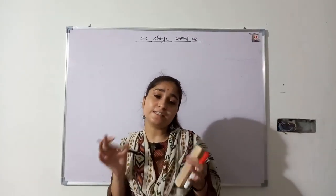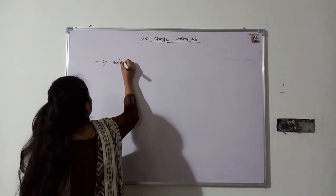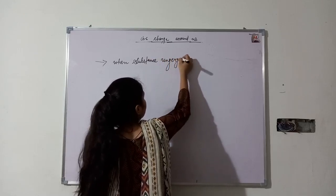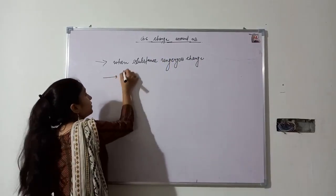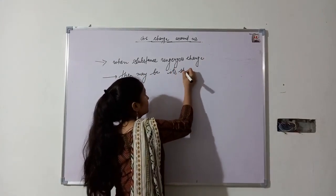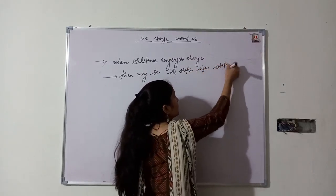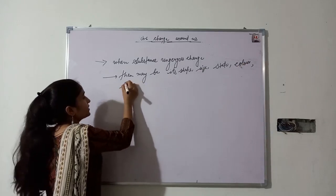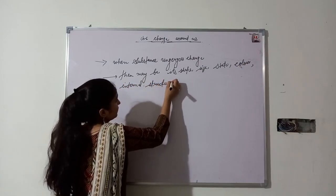How can we detect that some substance gets changed? When a substance undergoes change, then maybe its shape, its size, its state, its color, and its internal structure may be changed.